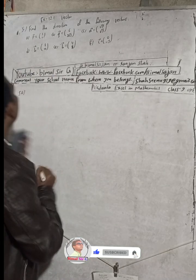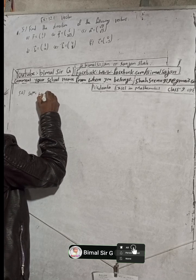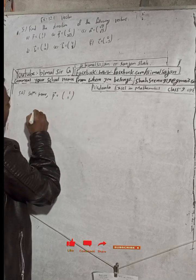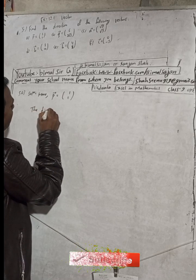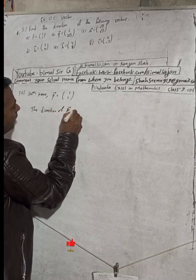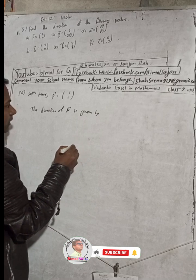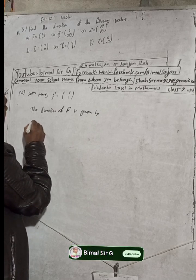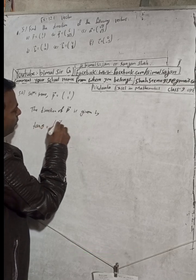Find the direction of the following vectors. For part (a), the vector P is equal to (1, 1). The direction of P vector is given by the formula: tan theta is equal to y component divided by x component.